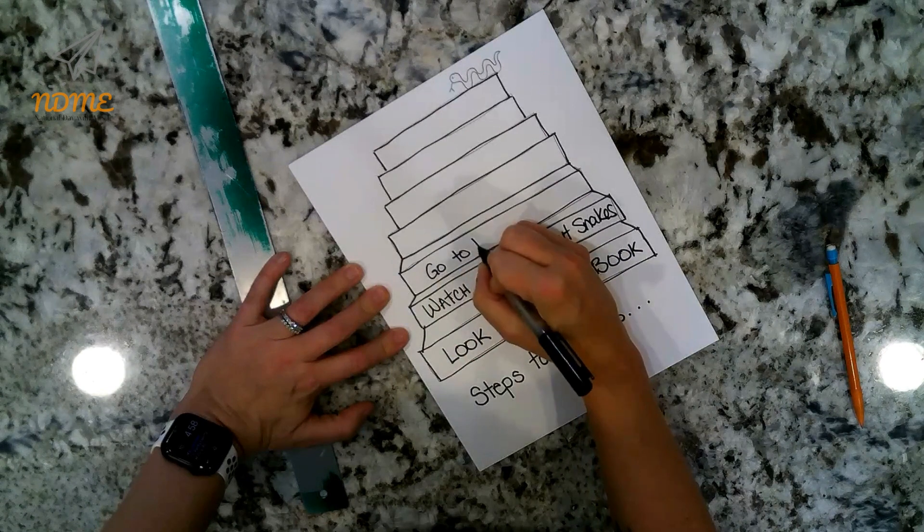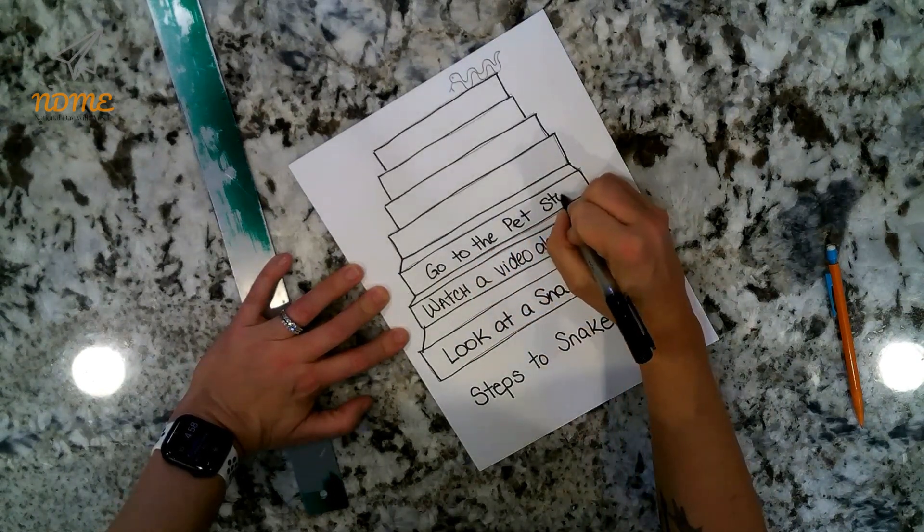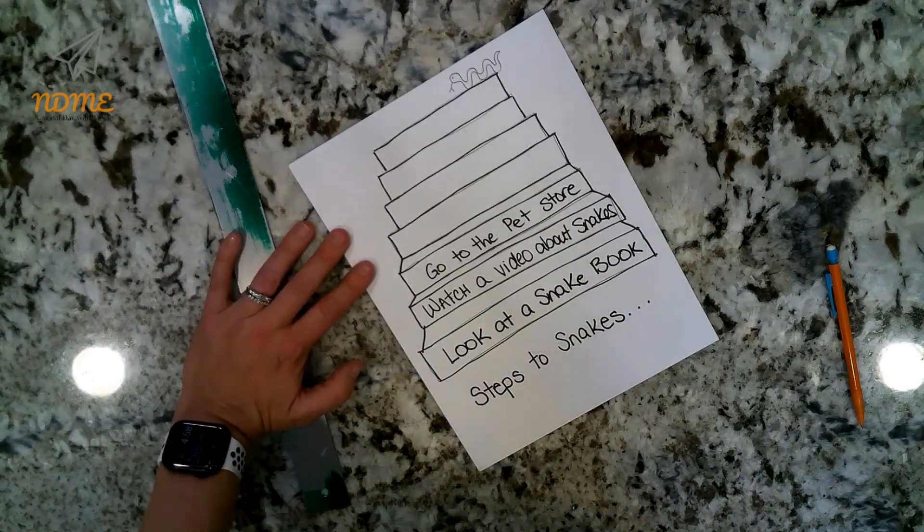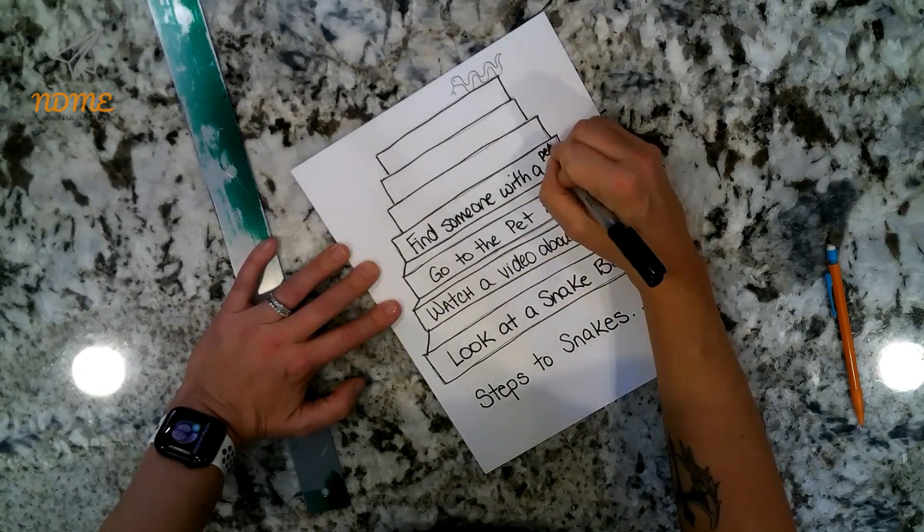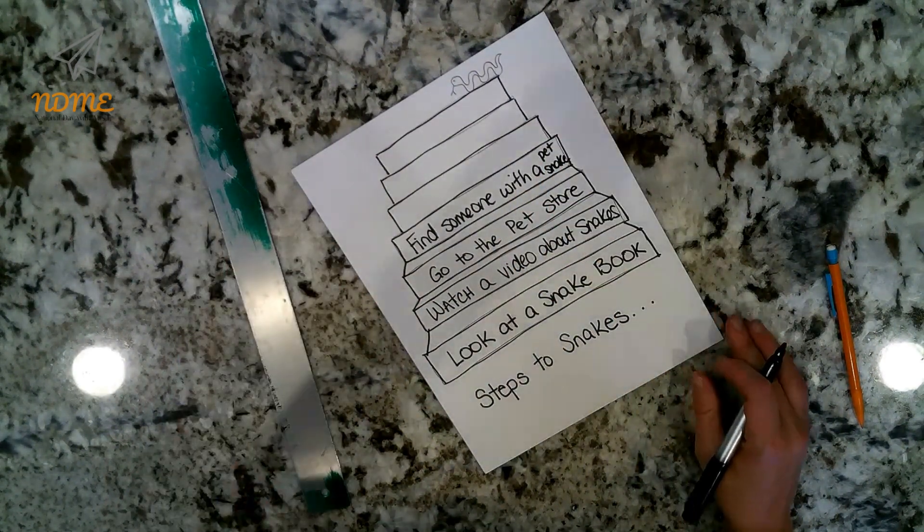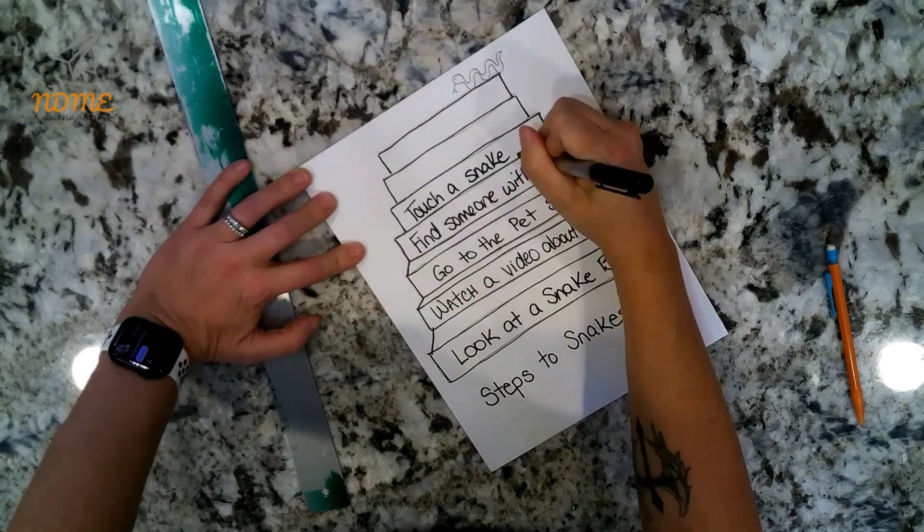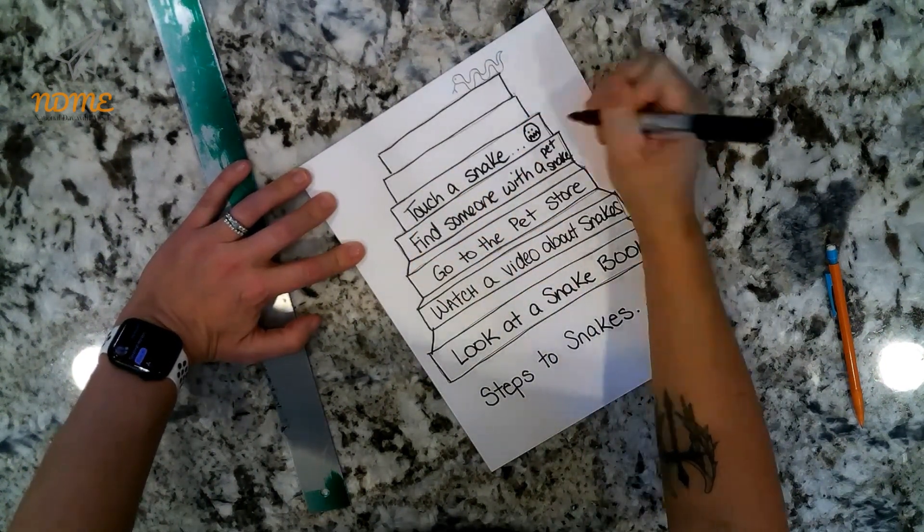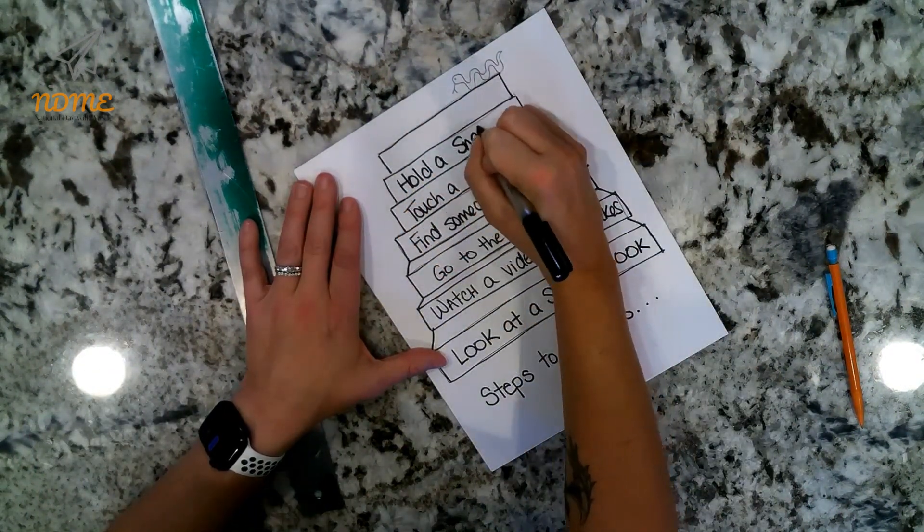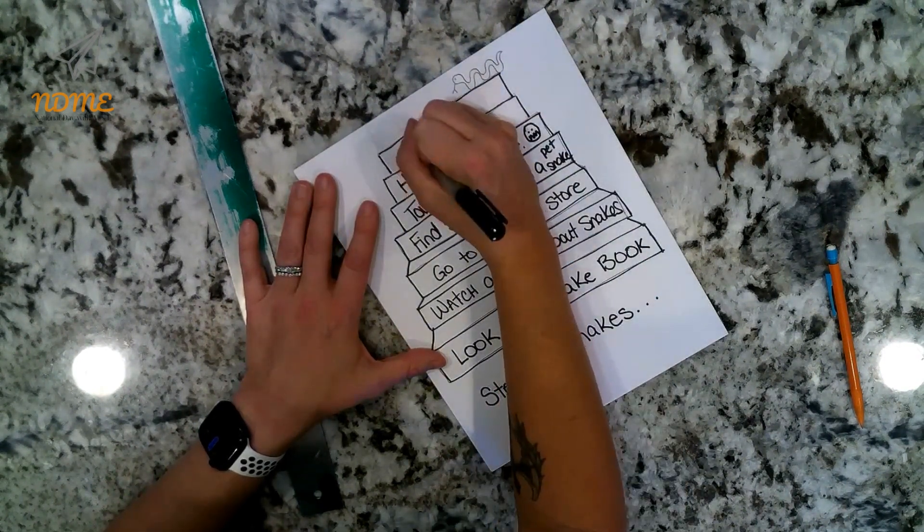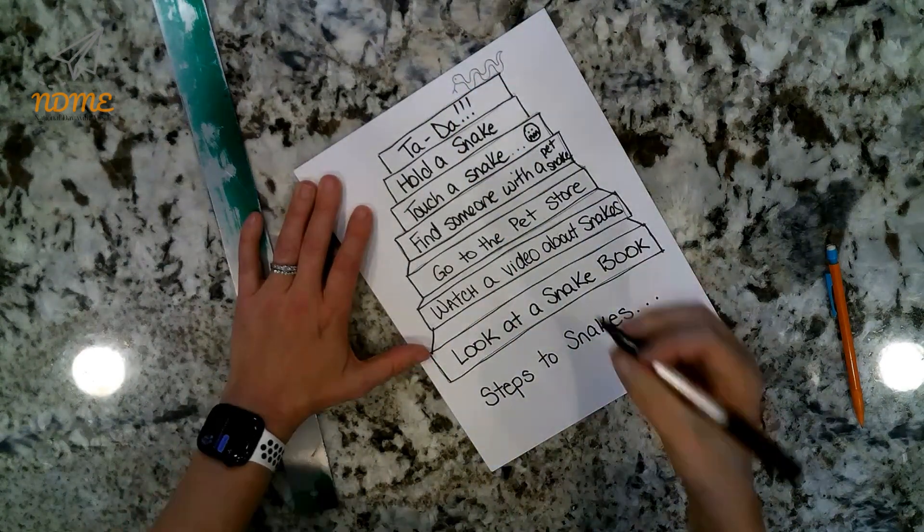And then I'll go to the pet store or the zoo and I'll look at real snakes in a safe space, which would be behind glass. And then I'll check in with one of my friends who has a pet snake and see if maybe they will let me look at it while they hold it. And then if I'm feeling brave and ready to take the next step, I can touch the snake and eventually hold the snake.